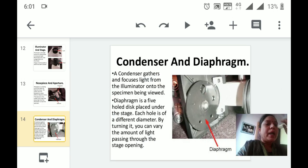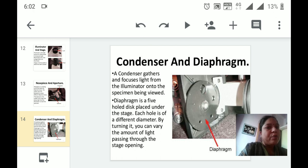Condenser and diaphragm: Both are present at the base of the microscope. The condenser is used to collect and focus the light from the mirror or illuminator on the specimen, whereas the diaphragm is a five-hole disc placed under the stage, and each hole is of different diameter. By turning it, we can vary the amount of light which is passing through the stage opening. Everything—the condenser, diaphragm, objective lenses, eyepiece—is used to focus and capture the image of that particular specimen very keenly.